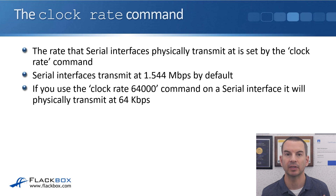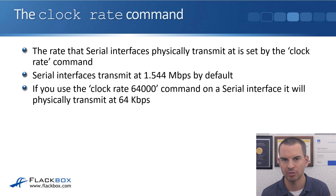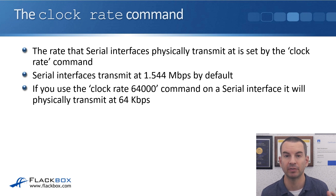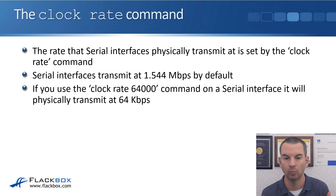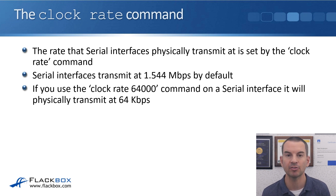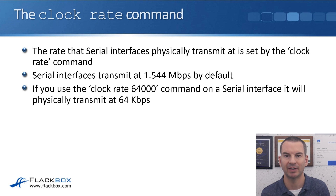The next command is the clock rate command, and this works on serial interfaces. Serial interfaces used to be used very commonly on WAN links — not so much nowadays, but you do still find them. The rate that serial interfaces physically transmit at is set by the clock rate command. Serial interfaces transmit at 1.544 megabits per second by default — that is the speed of a T1 interface commonly used in the United States, and since Cisco is a US company, that's why it is the default.